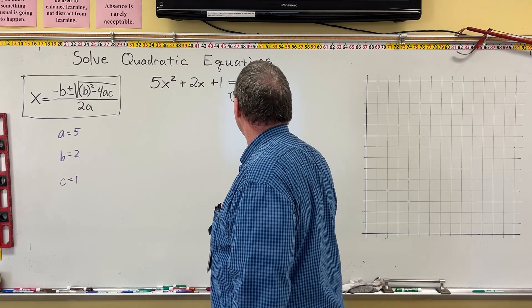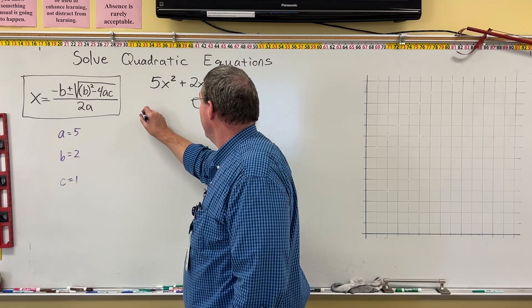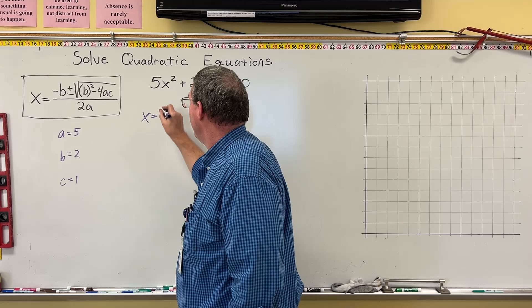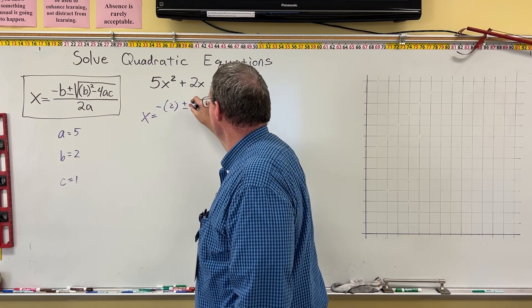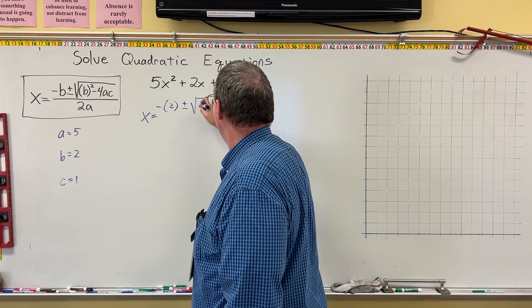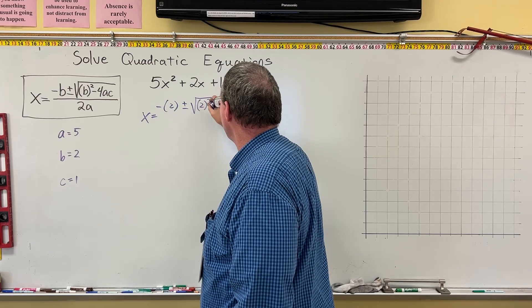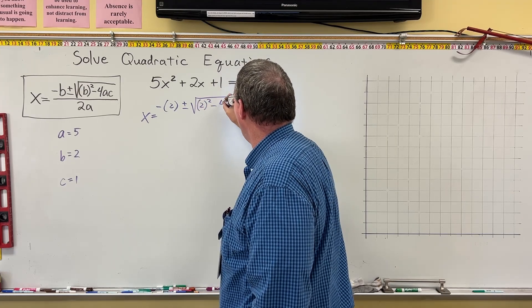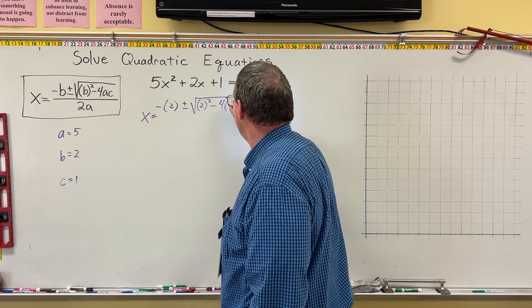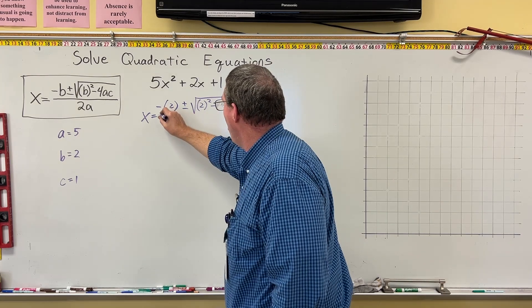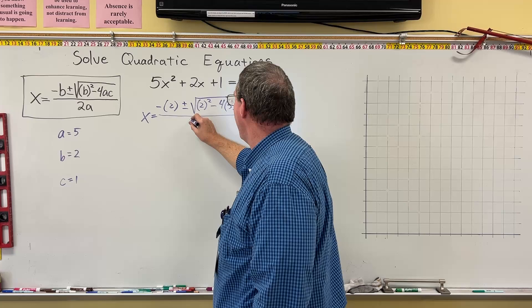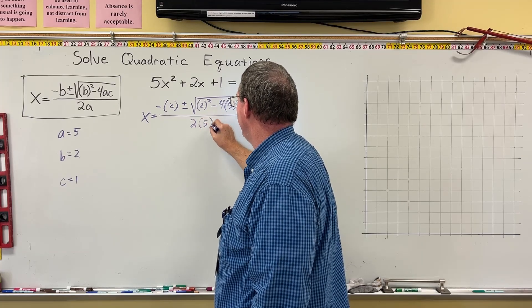So I'm going to do the quadratic formula. x is equal to negative b, so that's negative 2, plus or minus the square root of b squared, so 2 squared, minus 4 times a, which is 5, times c, which is 1, all over 2 times a, which is 2 times 5.